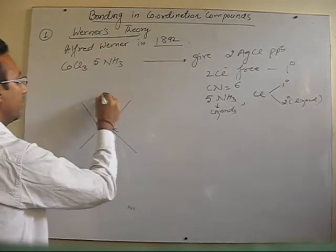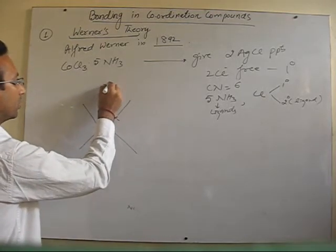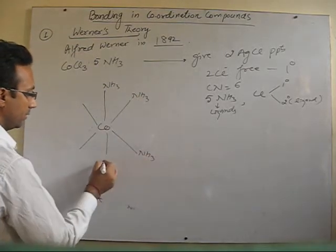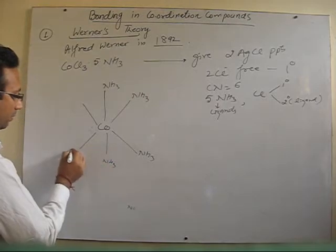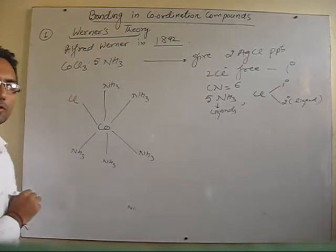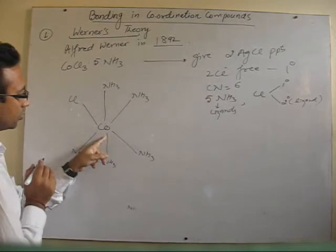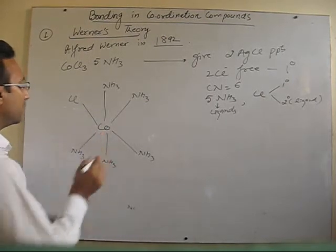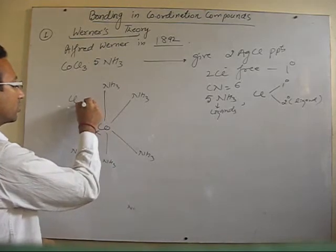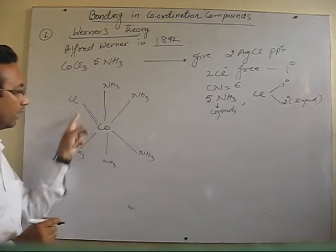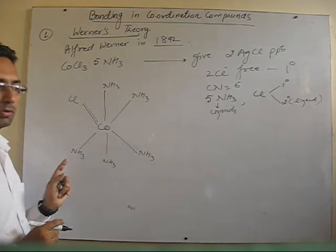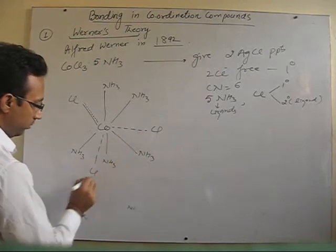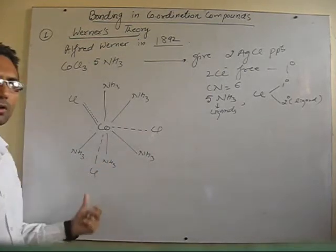The 5 positions of the octahedron are occupied by ammonia, and Cl is placed at one of the positions. This Cl is attached to cobalt with bold lines, showing that it satisfies secondary valency. But at the same time, it is satisfying the oxidation state of cobalt, so we have to place both dotted and bold lines. The other 2 Cl can be placed anywhere, shown by dotted lines.